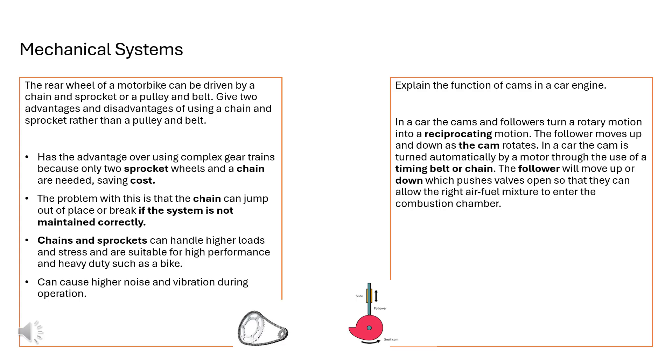Now it says explain the function of cams in a car engine. In a car engine they have cams and followers that turn in a rotary motion, so that rotary motion changes into a reciprocating up and down motion which you can see in this diagram. As the follower moves around and rotates, and that's usually done with a motor and a timing belt, that follower will move up and down over that cam which pushes the valve open so that you can allow the right air and fuel mixture to enter the combustion chamber.